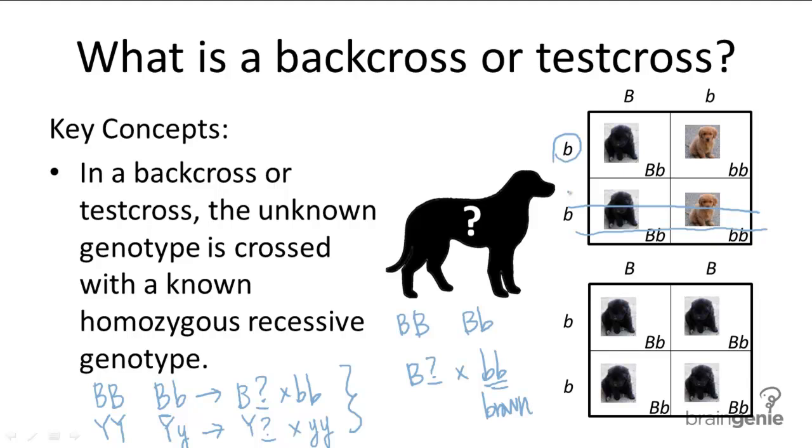But if you have even just one brown dog, even out of 100 offspring, you know that this dog is heterozygous. Because clearly there's genetic information in the black dog to produce brown offspring. And that is a backcross or testcross.